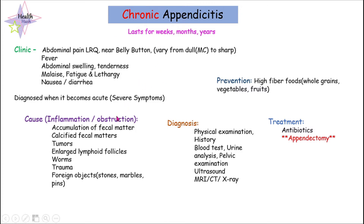The causes of chronic appendicitis are mainly inflammation or obstruction by accumulation of fecal matter, calcified fecal matter, tumors, enlarged lymphoid follicles, worms, trauma, or foreign objects like stones, marbles, and pins being in the intestines. These can cause inflammation and obstruction leading to inflammation of the appendix.